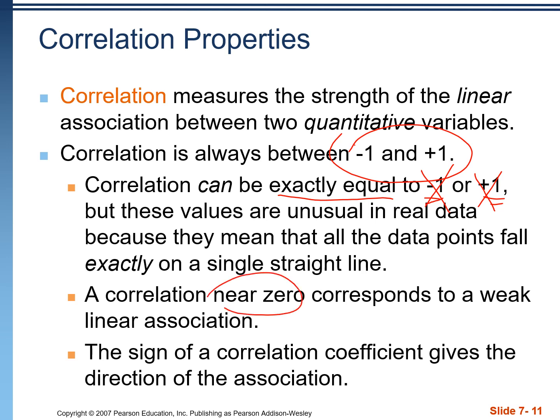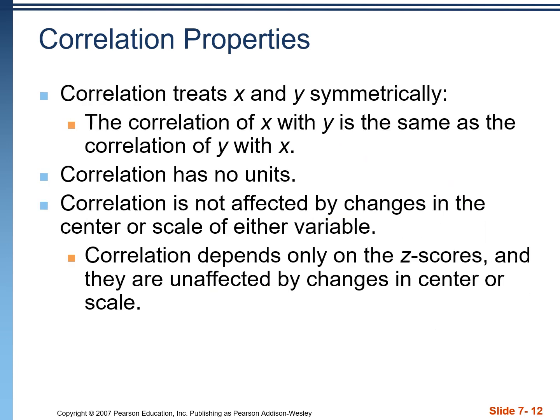When we have a correlation near zero, it means we have a weak linear association — the points are just scattered everywhere. The sign, positive or negative, gives the direction of the association: positive associations go uphill, negative go downhill. Correlation is symmetric, so in the previous example, the correlation between heights and weights was 0.644 — if we reversed it and found the correlation of weights with heights, it would also be 0.644. Correlation has no units because it's computed with Z-scores, which are unaffected by changes in center or scale.